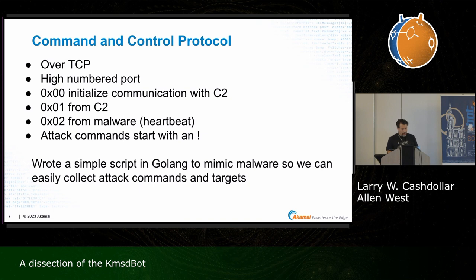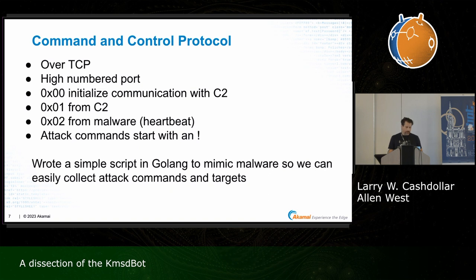The command and control protocol is over TCP. It uses a high-numbered port to connect to, and it uses a null byte to initialize communication with the C2 server. When the malware connects to the C2, it sends an 0x00, and then the C2 responds back with an 0x01. The heartbeat works similarly: the malware sends 0x02 and the C2 sends back 0x01. Attack commands start with an exclamation point. Because this was so simple, it was easy to craft code to emulate this so we could track the attacks and examine their targets.